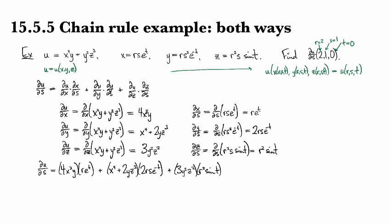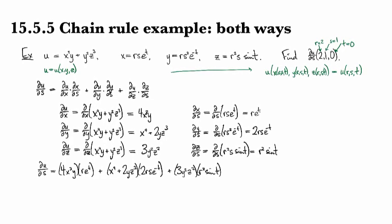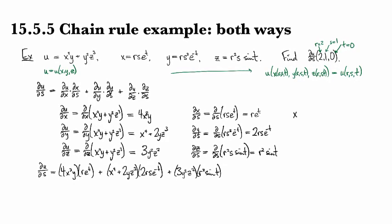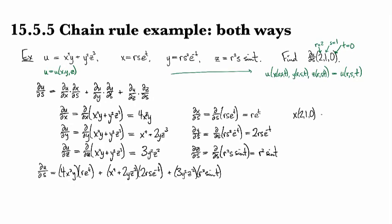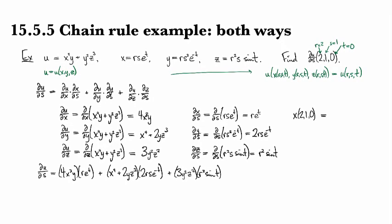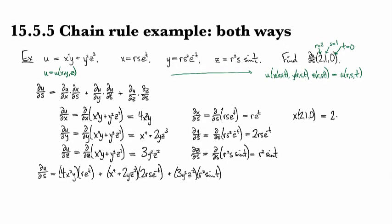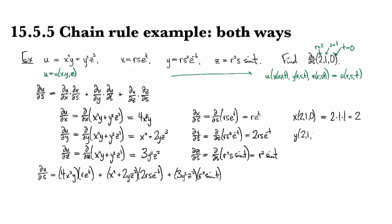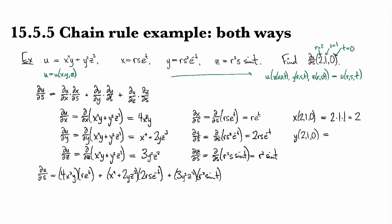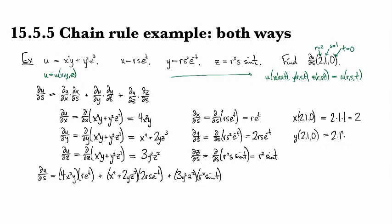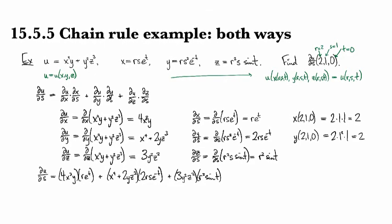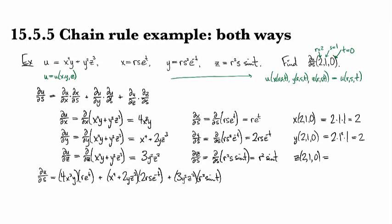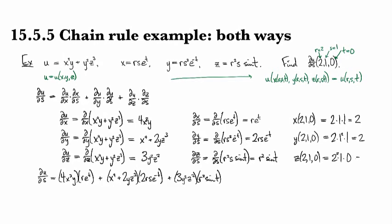So let's see. So now I can substitute in the values. So let's see. So if I have x at 2, 1, 0, because we're looking at when rst is equal to 2, 1, 0, that's going to be 2 times 1 times 1, so 2. And y at 2, 1, 0 is going to be 2 times 1 squared times 1, which will give me 2. And then z at 2, 1, 0 is going to be 2 squared times 1 times 0, so that's going to be 0.